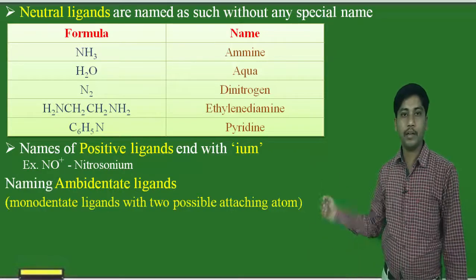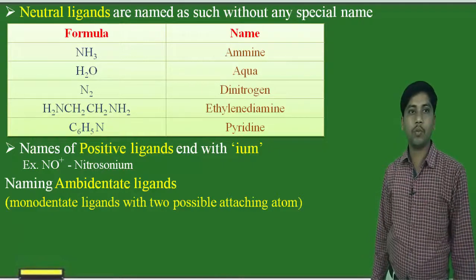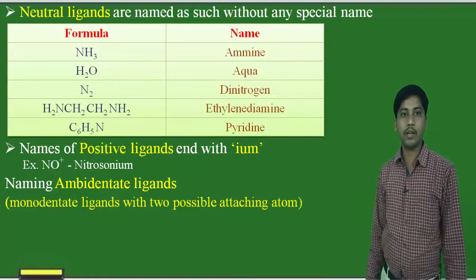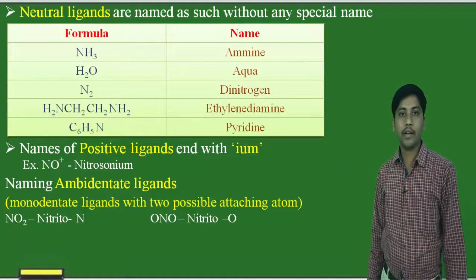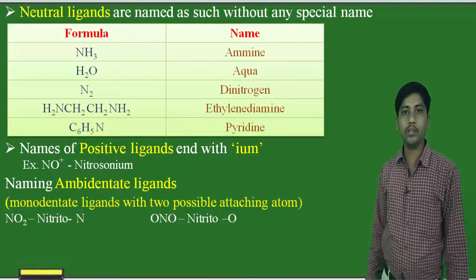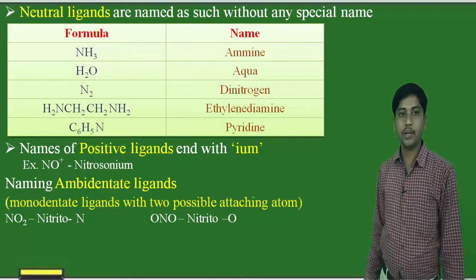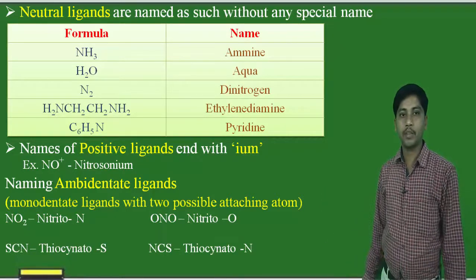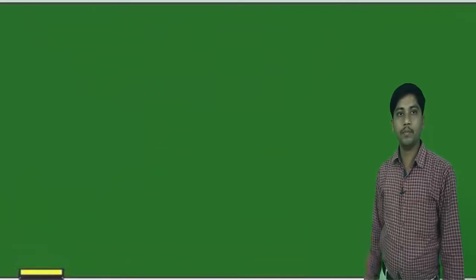Next, the naming of ambidentate ligands — ligands which have more than one attaching atom. For example, NO2: if nitrogen is the attaching atom, the name is nitrito-N; if oxygen is the attaching atom (written as ONO), the name is nitrito-O. Similarly, thiocyanate: if S is the attaching atom, it is thiocyanato-S; if N is the attaching atom, it is thiocyanato-N.